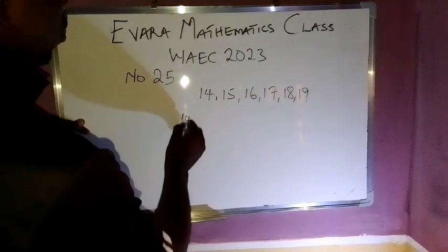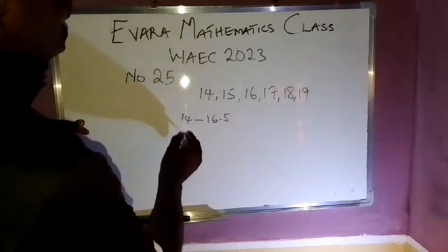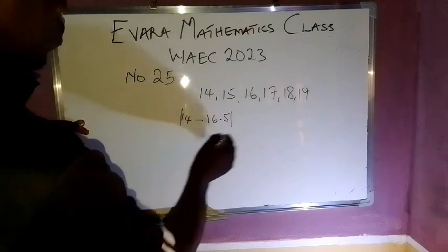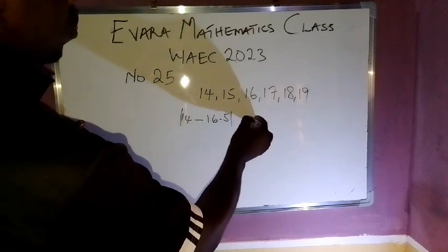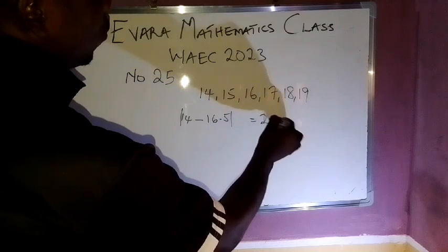14 minus 16.5, you take the absolute value. That will be 2.5.